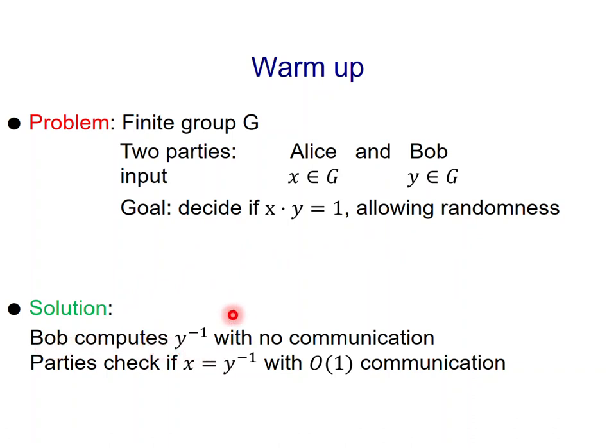This warm-up case has a very simple solution. Bob can compute in his head the inverse of Y with no communication. Then the parties can simply check if X times Y is equal to 1 by checking if X is equal to Y inverse, which can be done with constant communication using the protocol for equality.